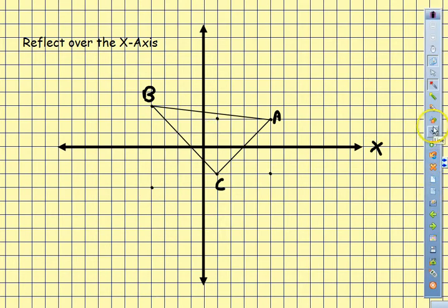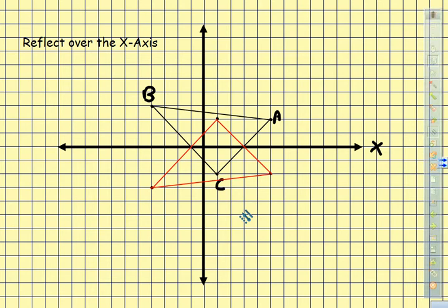And now we can simply take our triangle and I'm going to make it red. Create our line. To that point, to that point, to that point. And you can see the triangle that we just reflected.